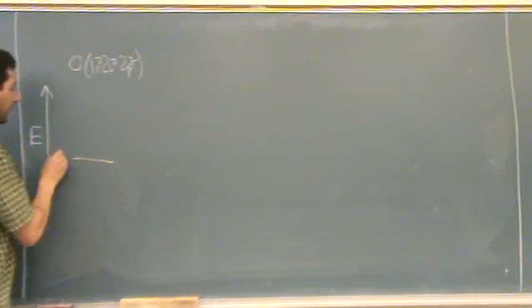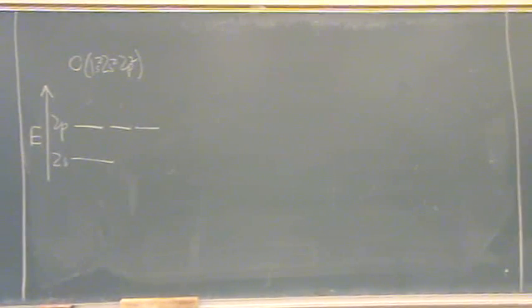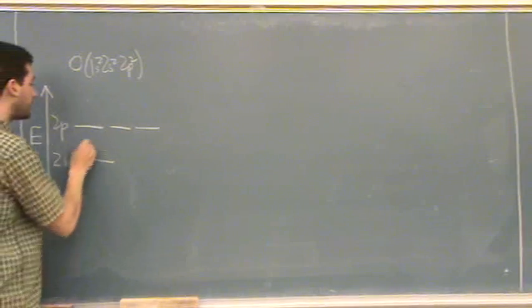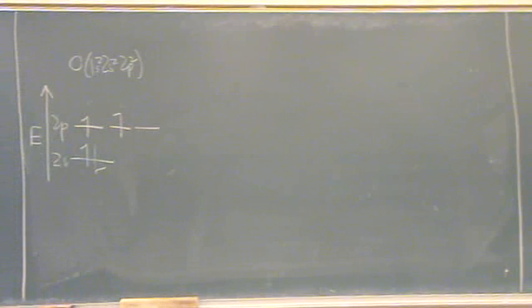So we're only going to write down the 2s and the 2p, because we're not going to deal with core electrons. And the 1s2, those are both core electrons. So it's 2s2, 2p2. So there's its electron configuration, but written in the orbital energy line diagram.